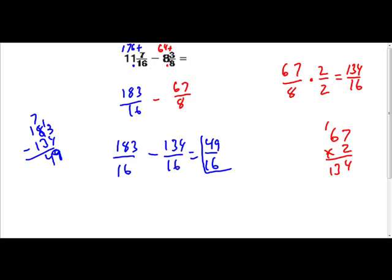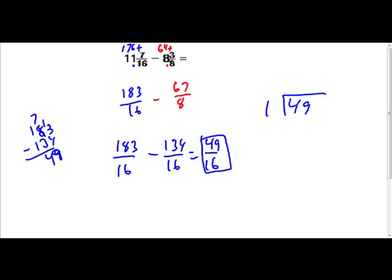49 sixteenths is our answer. But we're not done yet because it is not simplified. It is an improper fraction. 49 sixteenths. So let's simplify it. All fractions are division problems. 49 divided by 16. So we'll take 49, we'll divide by 16. 16 is really close to 15, so I'm going to skip count by 15 and see how close I can get to 49.